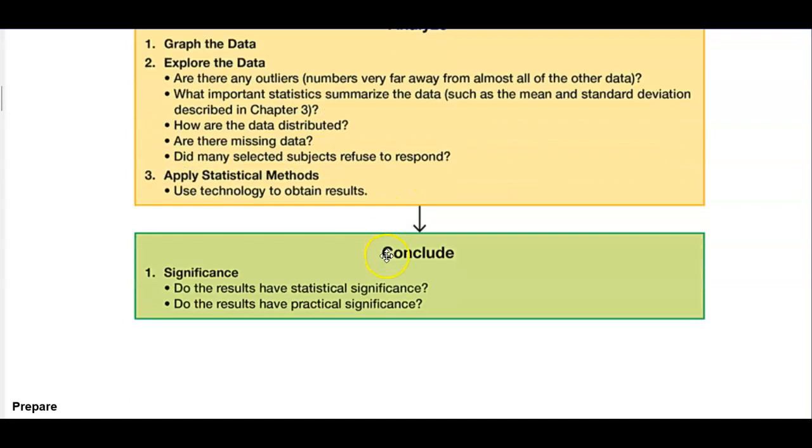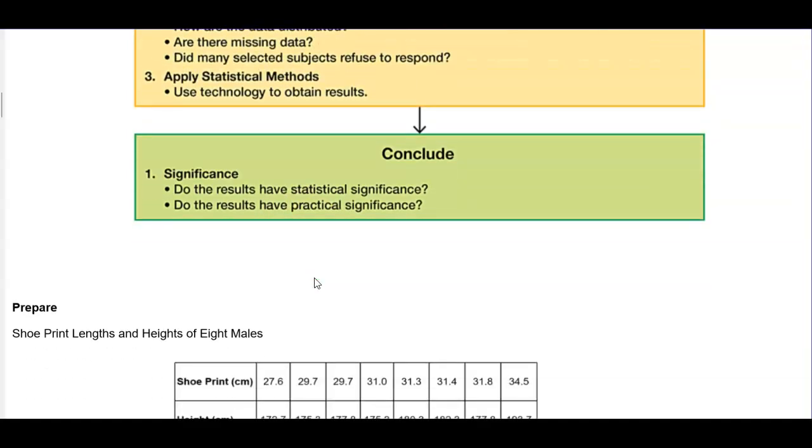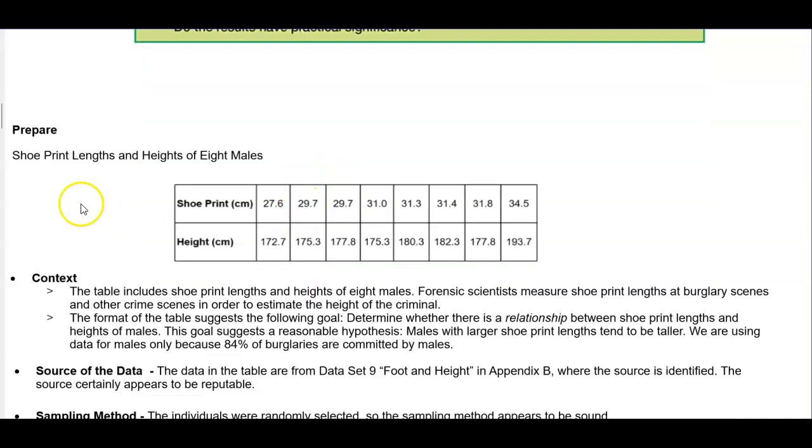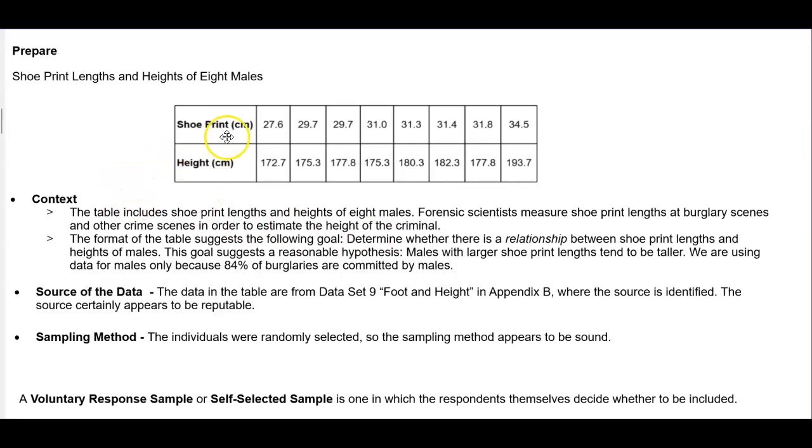Once you analyze and move forward, then you want to be able to form a conclusion. In this way, we want to be able to find the significance. Do the results have statistical significance or do the results have practical significance? Going back to this list, whenever we prepare, this is what we would actually do during the preparation stage. For example, let's say we want to collect shoe print lengths and heights of eight males. So we collected data. You can see the first row represents the shoe print in centimeters and then the height in centimeters.